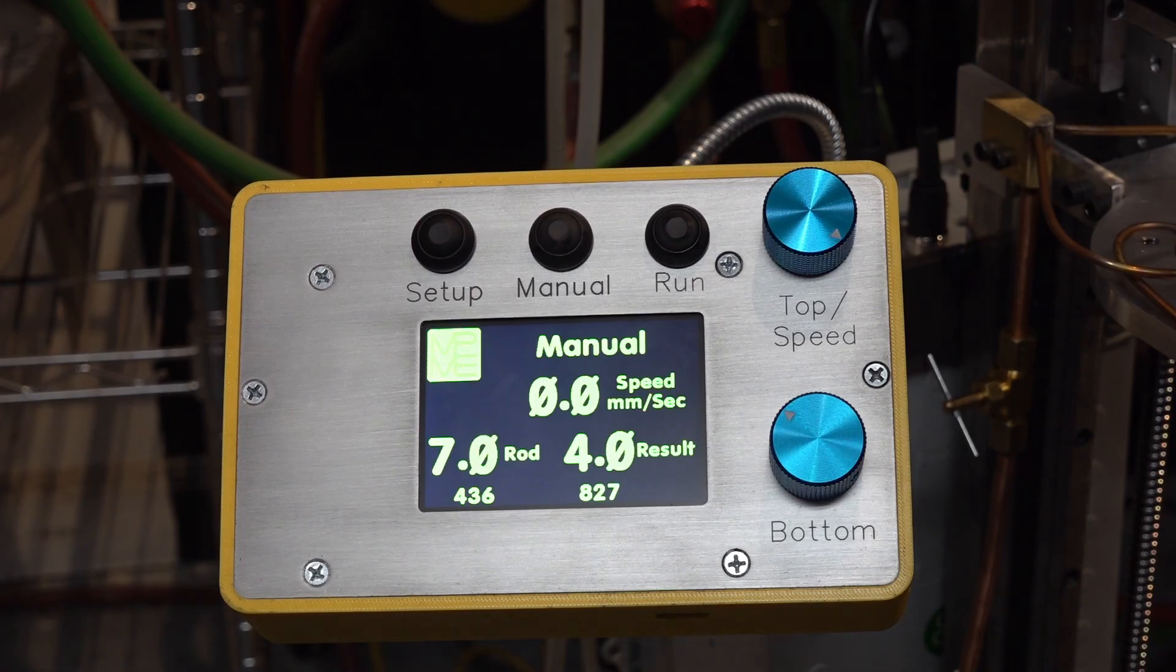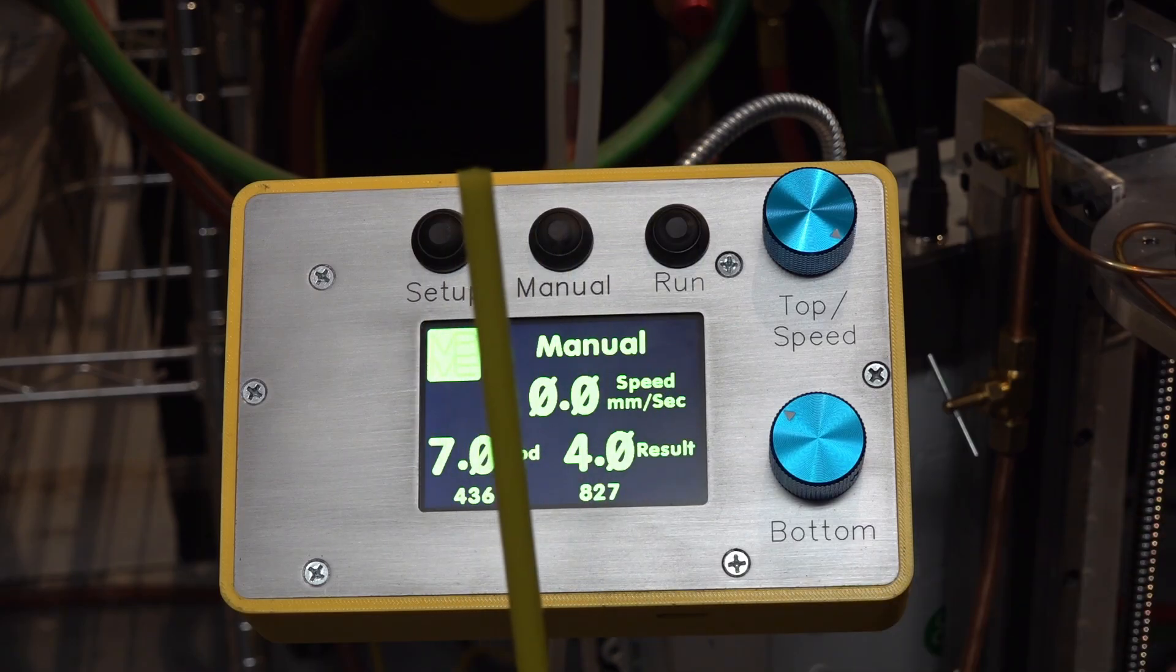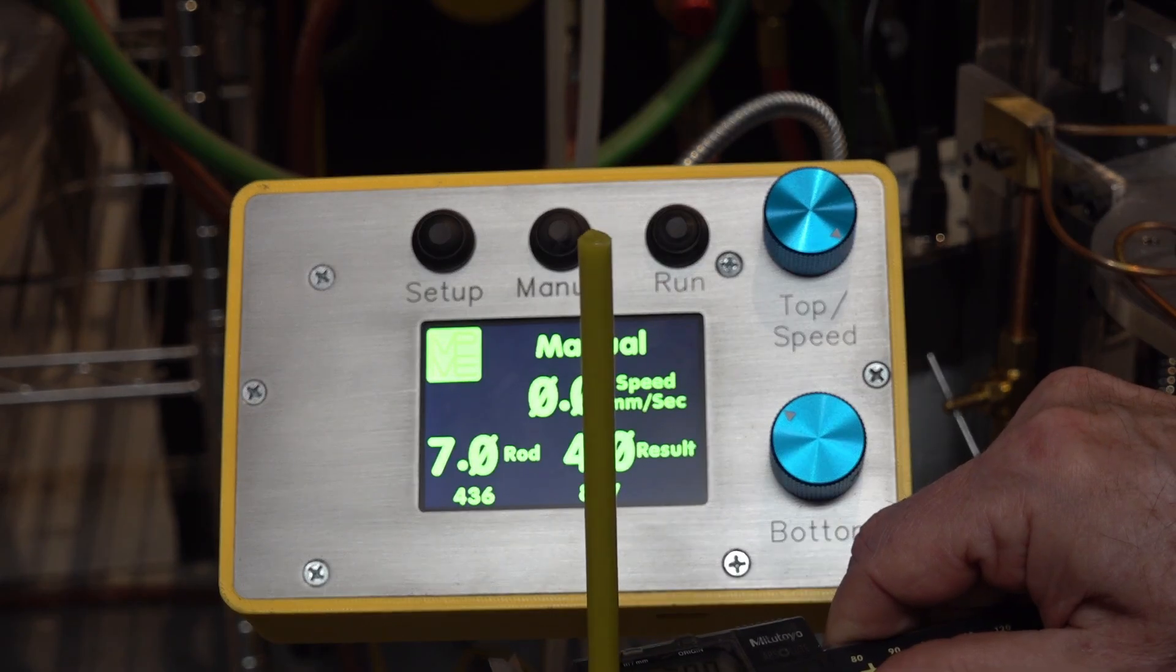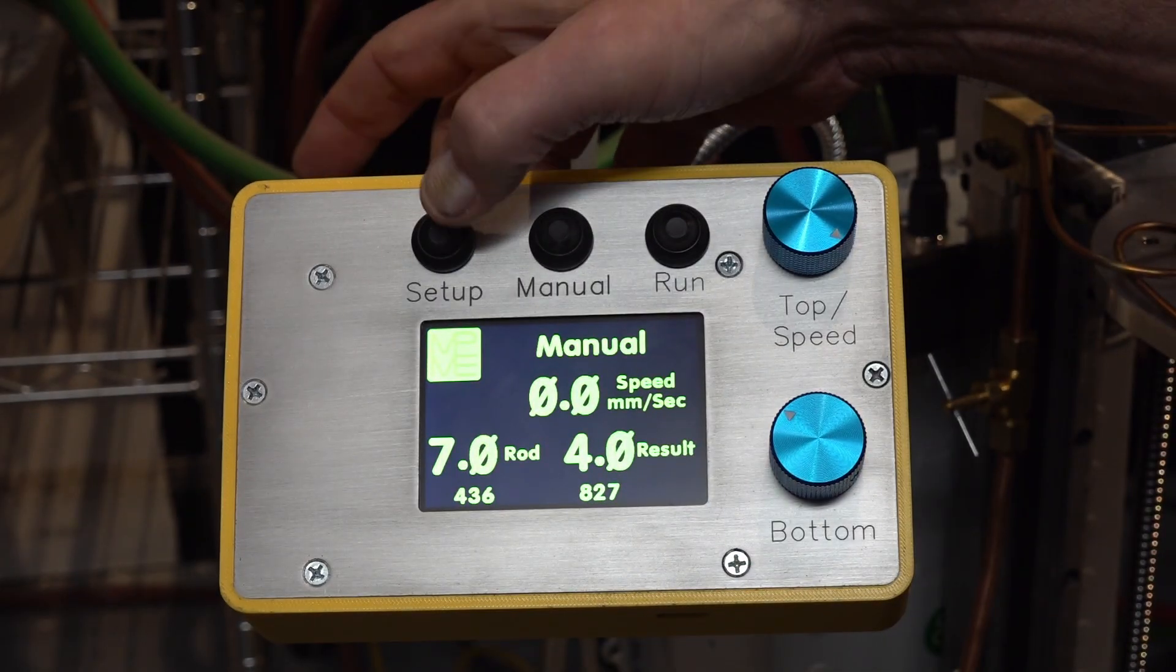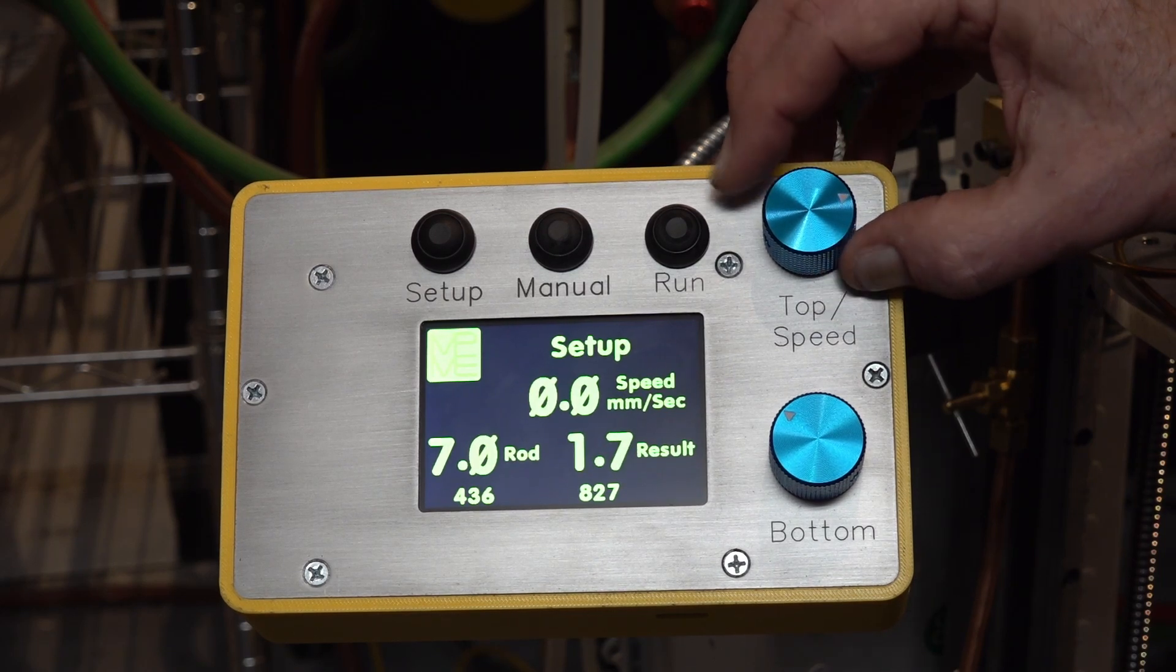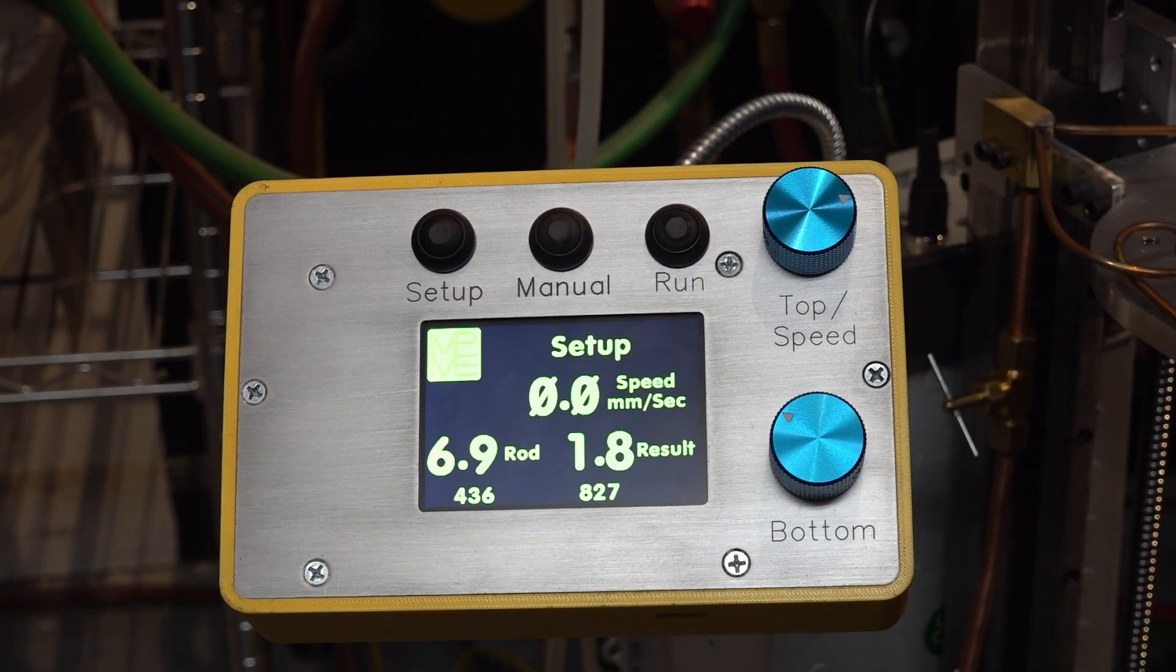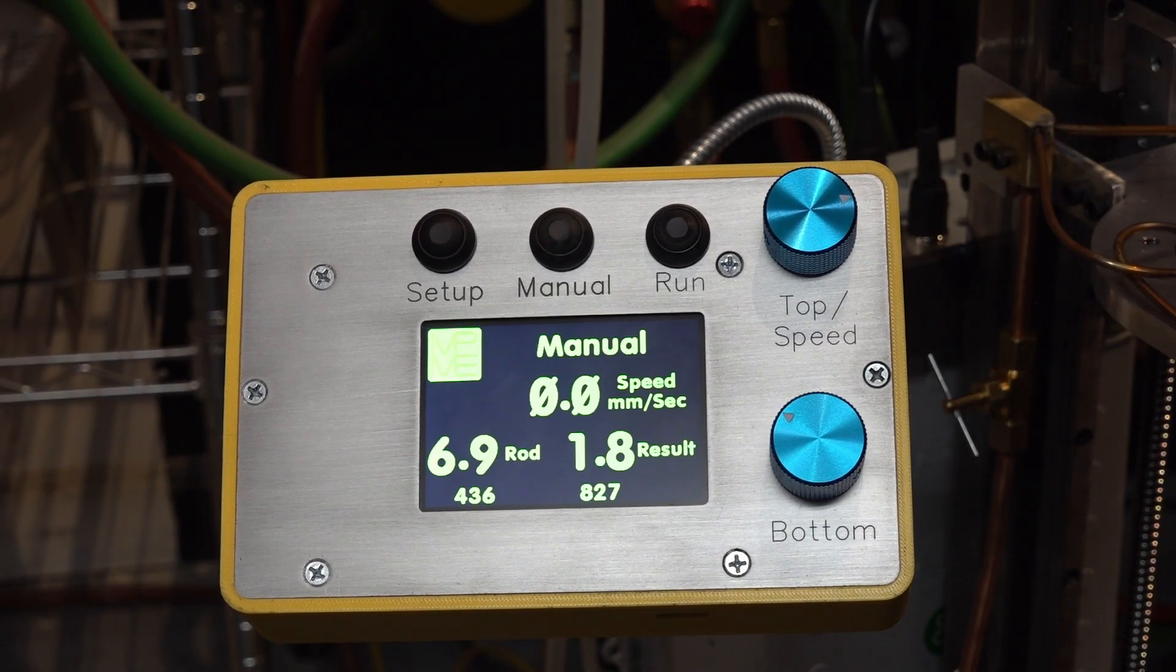I start out by taking the color rod that I'm going to use and measure it with a caliper, and the rod isn't round, so I try to come up with what's the average diameter. Then go into setup, and I'm going to be pulling a 1.8 millimeter result from a 6.9 millimeter rod, then put it back into manual mode, put the rod in the lower chuck, and now I'm ready for fire.